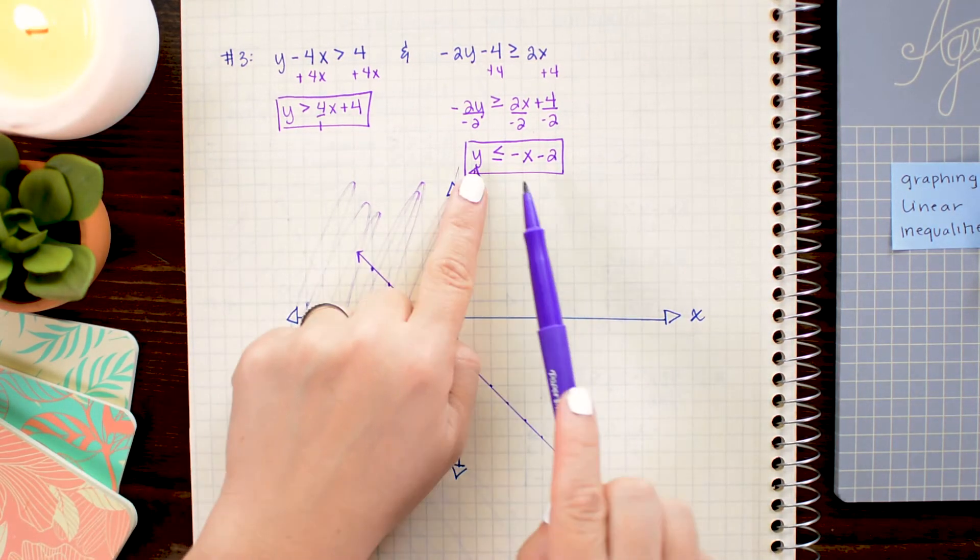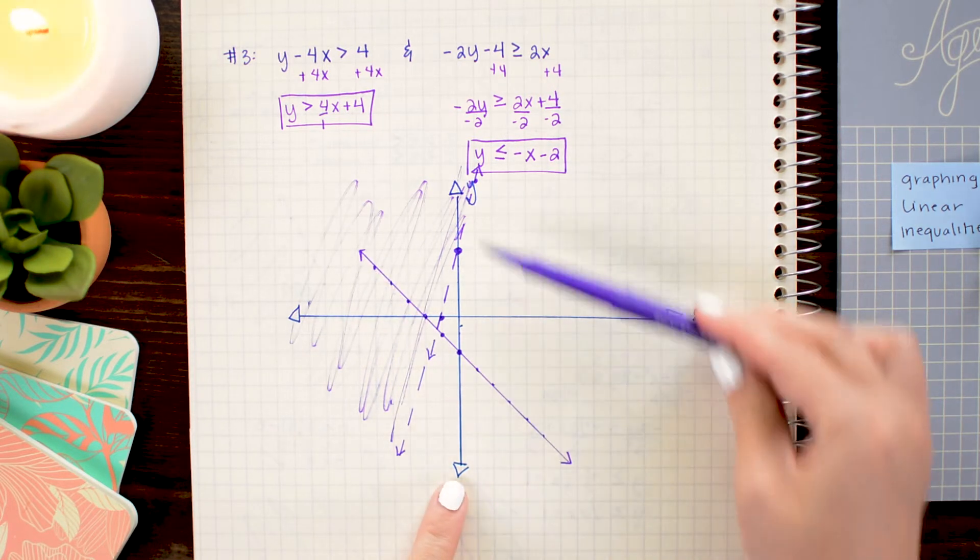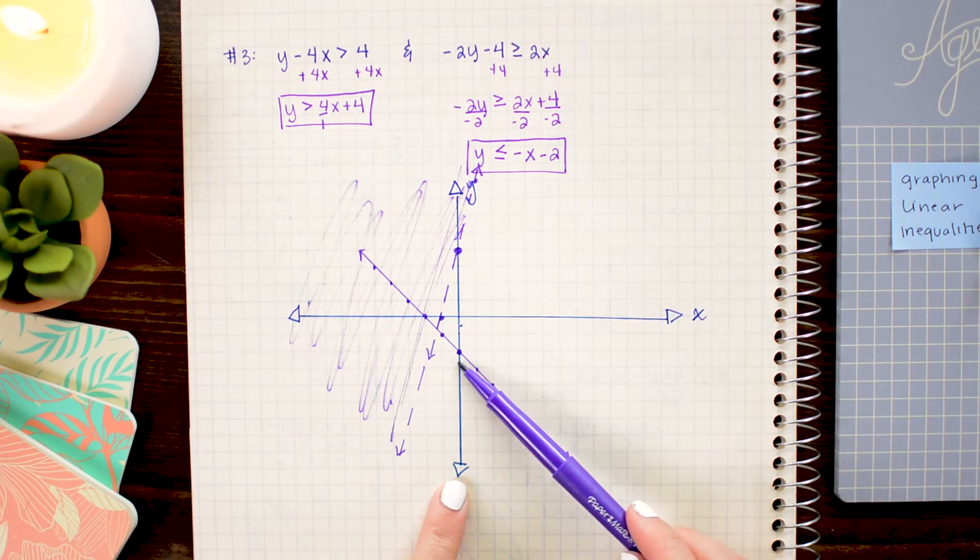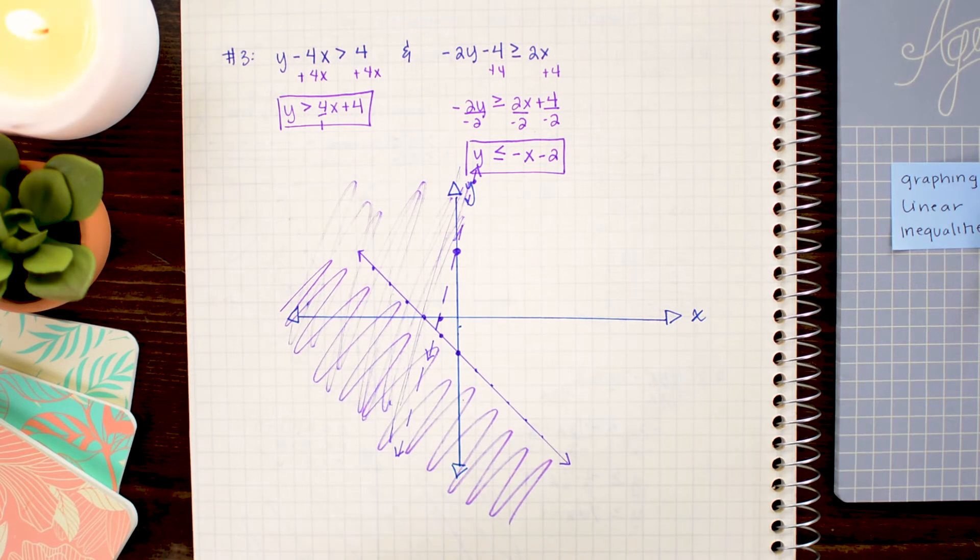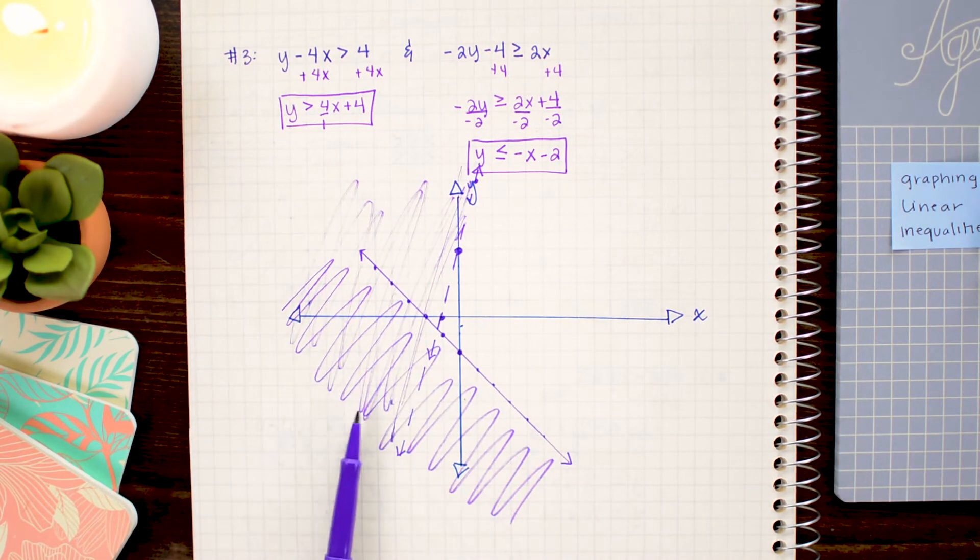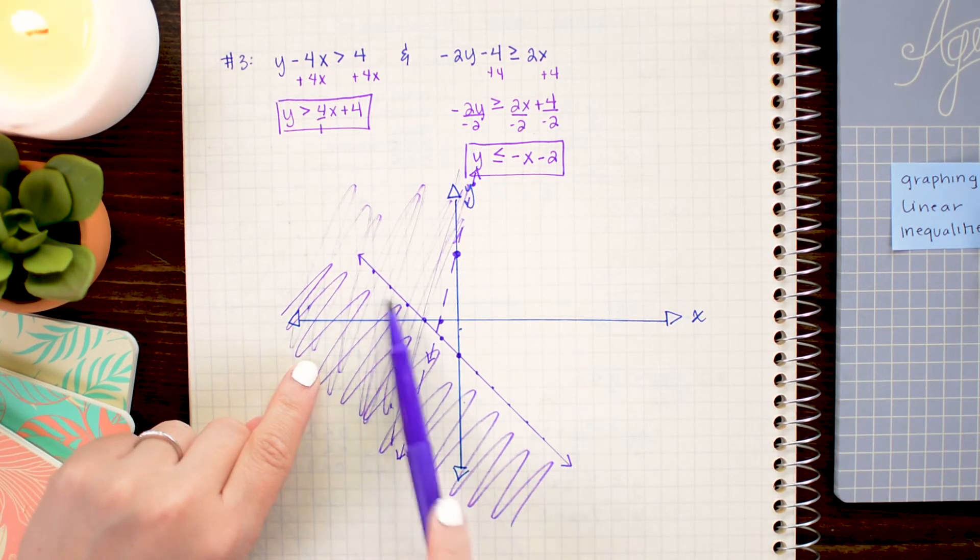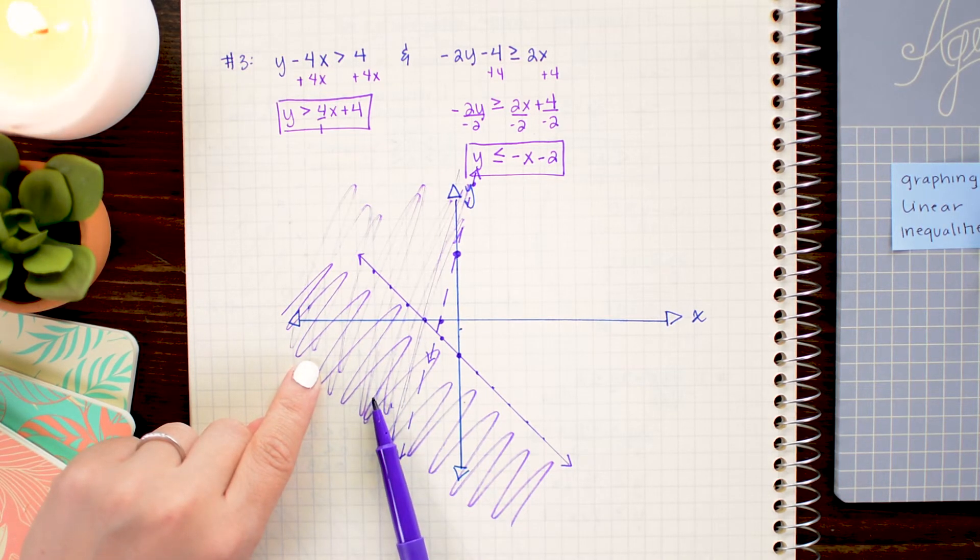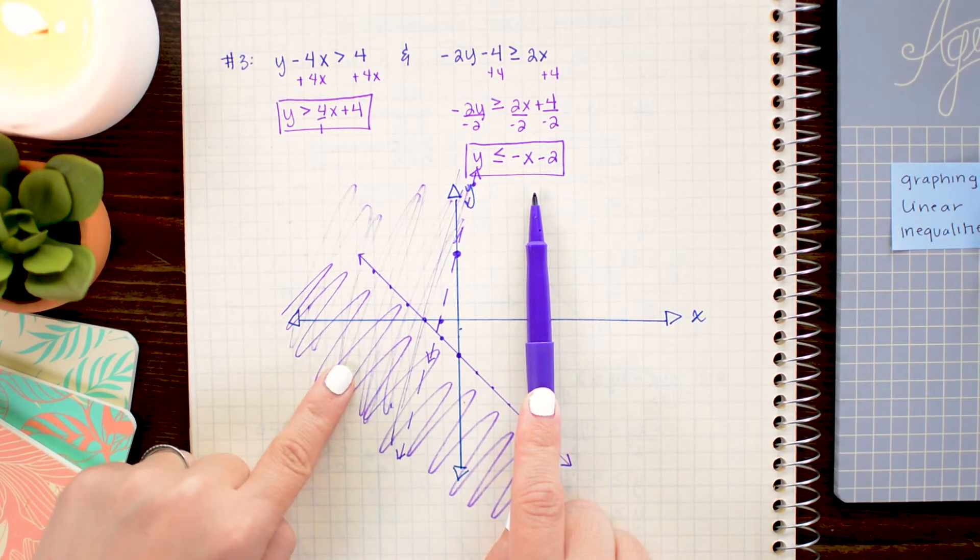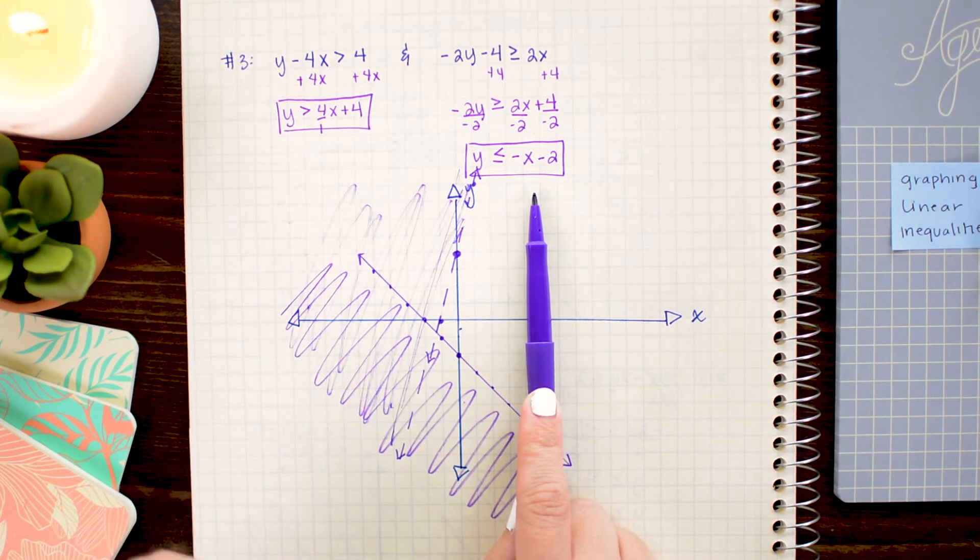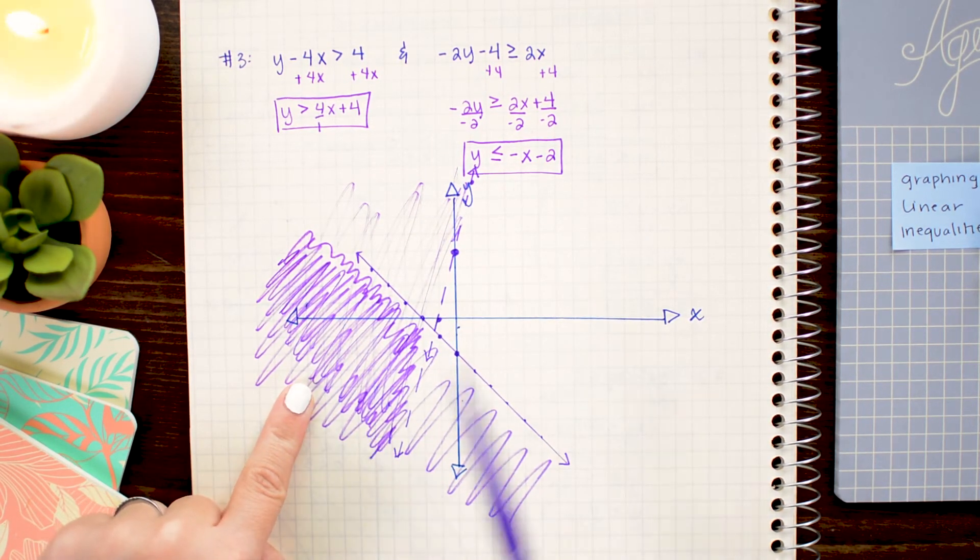And then for our solid line, we want y values that are smaller than it. So I want to shade below it. So here's our line. Here's our y axis. The values are smaller on this side. So I'm going to lightly shade below the line. Now here is the really important part. Notice that when you shaded the region for the first line and the region for the second line, we have a region that overlaps. That overlapping region is the region that is the solution to this system of inequalities. So I want to make sure it's really obvious that that is the overlapped part. So I'm just going to shade it a little bit darker so it stands out. This is the solution area for both inequalities.